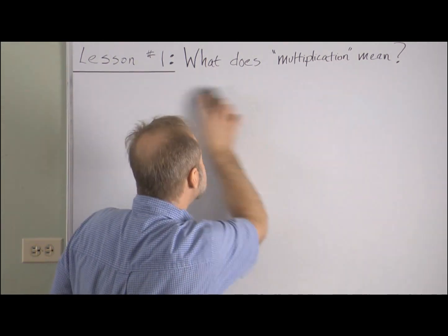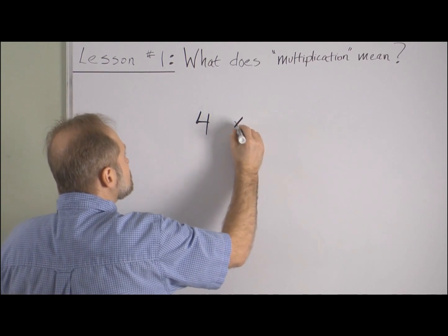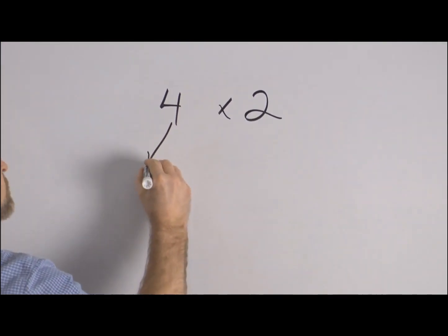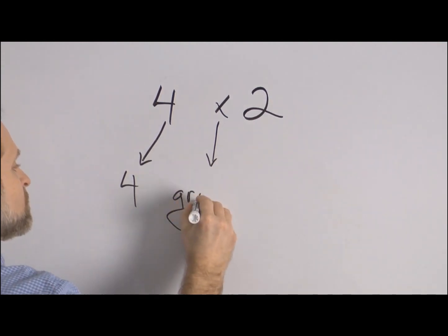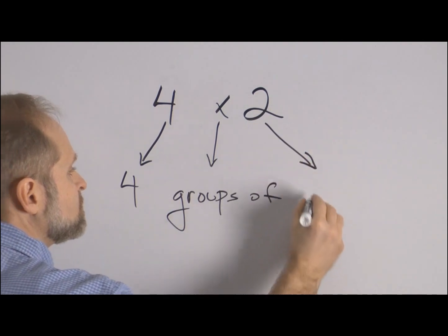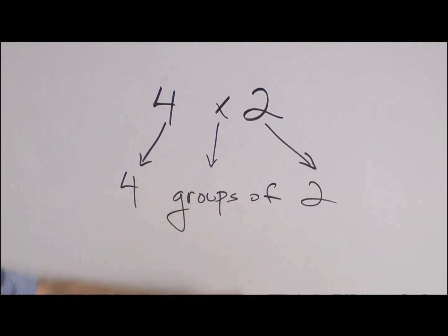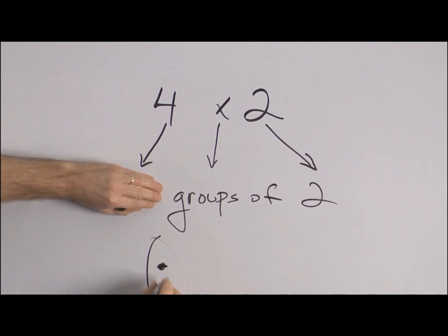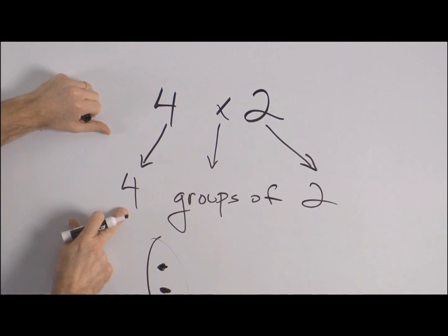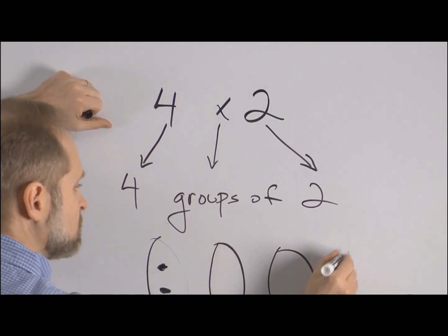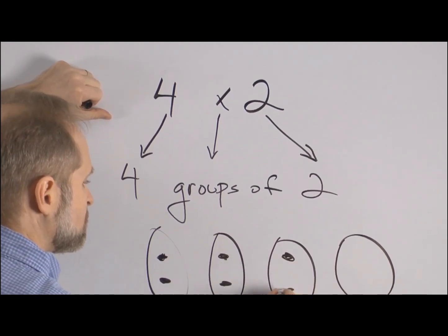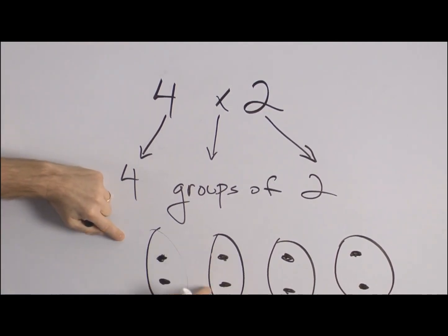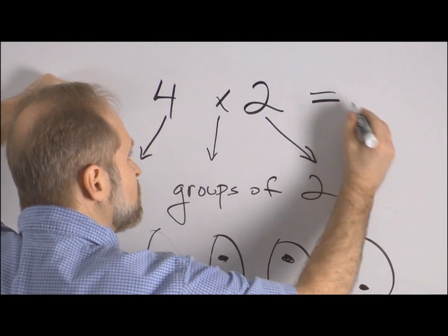Let's try another example. Here we have 4 times 2. Let's do the same thing: 4 groups of 2. What does 4 groups of 2 look like? Let's cover up the 4 for a moment. Here we have groups of 2 — let's draw a group of 2. We need 4 of these groups. Count the dots, and we find that 4 times 2 equals 8.